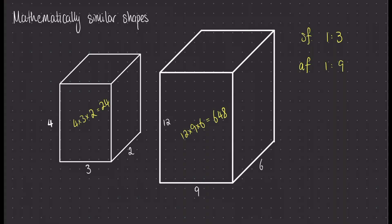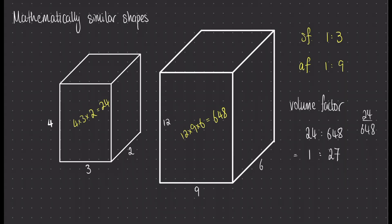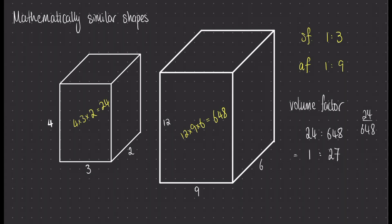Let's link together the volume of the smaller object with the volume of the larger object. This is related by something I call the volume factor, and the ratio will be 24 to 648. Simplifying — you can put it into your calculator as a fraction, 24 over 648 — we find that simplifies down to 1 to 27. Comparing the volume factor to our original scale factor, we've just cubed both sides of the scale factor to find the volume factor 1 to 27. 1 cubed is 1 and 3 cubed is 27.